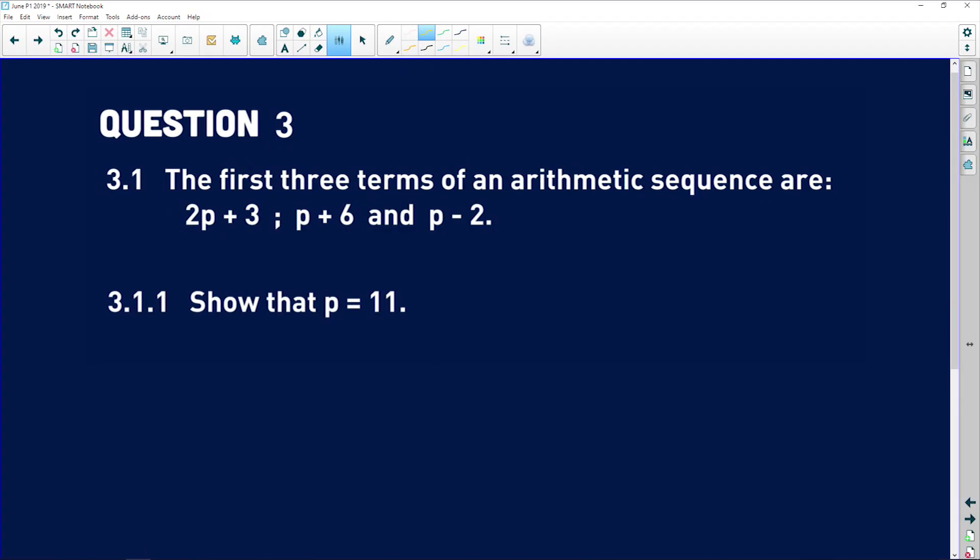Question 3 is also sequences and series or number patterns, but it's going to be looking at an arithmetic sequence, so let's just hop right into it. 3.1 says the first three terms of an arithmetic sequence are 2p plus 3, p plus 6, and p minus 2.